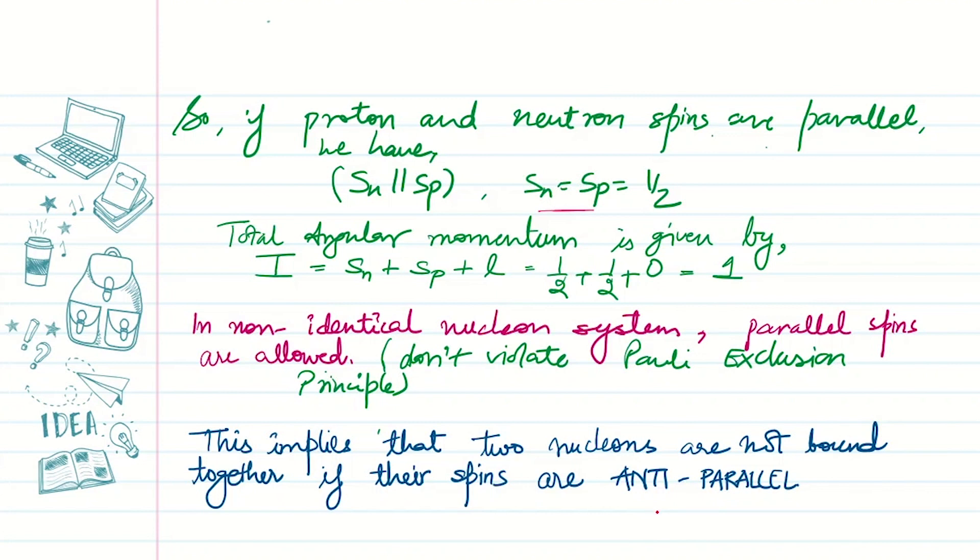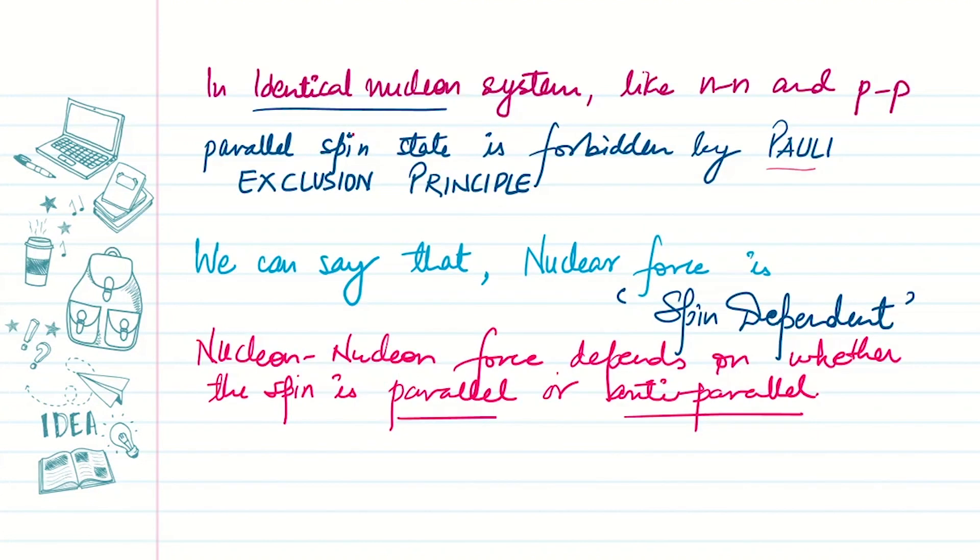This implies that two nucleons are not bound together if their spins are anti-parallel. In identical nucleon systems like neutron-neutron and proton-proton, the parallel spin state is forbidden by the Pauli exclusion principle.